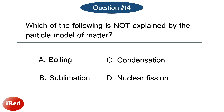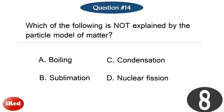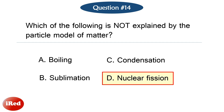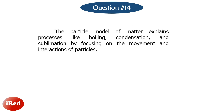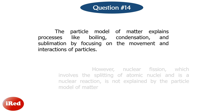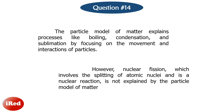Question number fourteen. Which of the following is not explained by the particle model of matter? The correct answer is letter D: nuclear fission. The particle model of matter explains processes like boiling, condensation, and sublimation by focusing on the movement and interactions of particles. However, nuclear fission, which involves the splitting of atomic nuclei and is a nuclear reaction, is not explained by the particle model of matter.